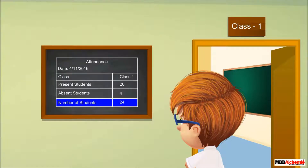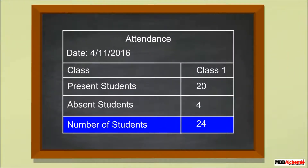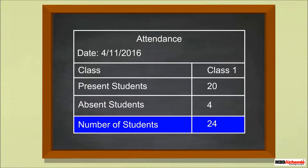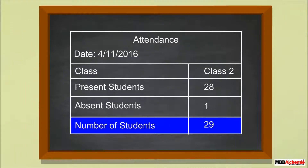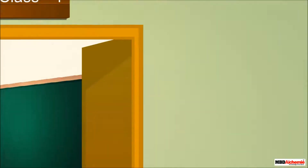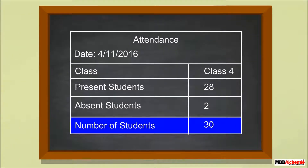Neil sees the attendance board outside every classroom in his school and notes down the attendance record of every class. 20 students are present and 4 students are absent in class 1. 28 students are present and 1 student is absent in class 2. 24 students are present and 4 students are absent in class 3. 28 students are present and 2 students are absent in class 4. 24 students are present and 2 students are absent in class 5.